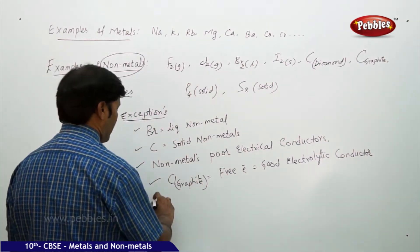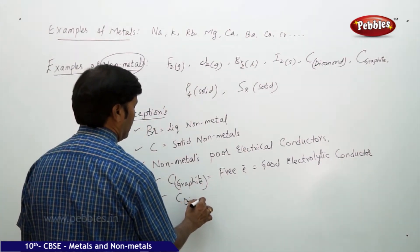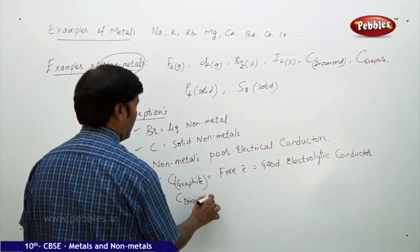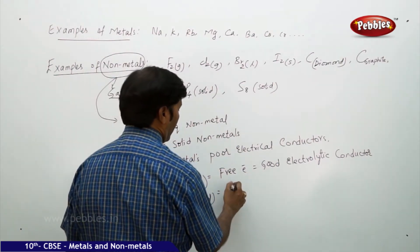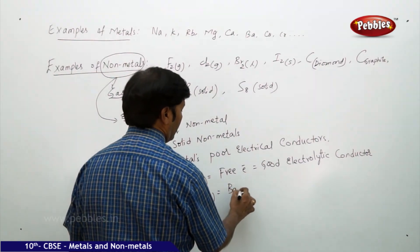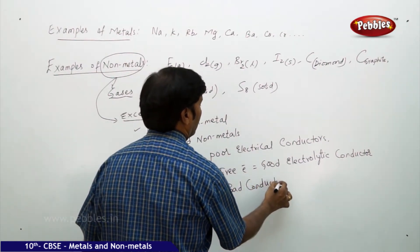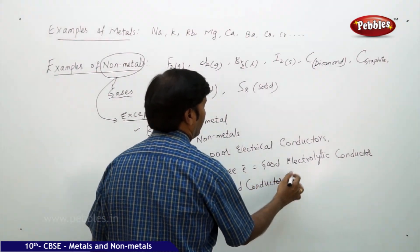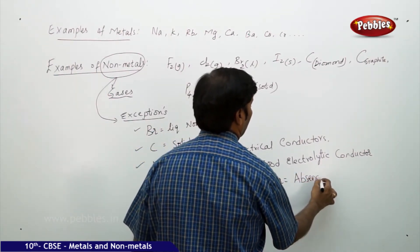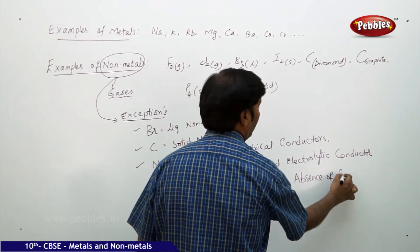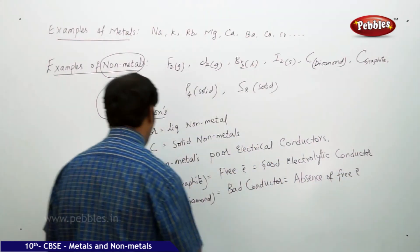Carbon diamond, on the other hand, is a bad electrolytic conductor. That is because of the absence of free electrons in diamond.